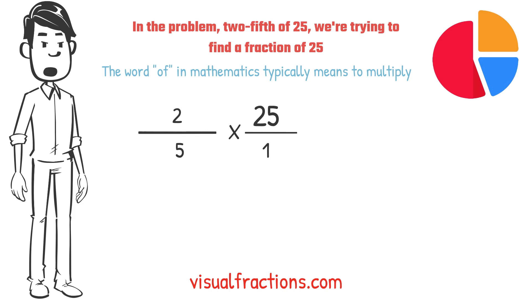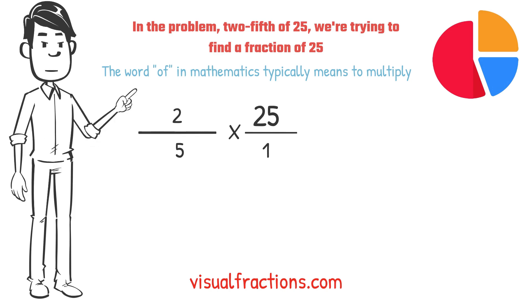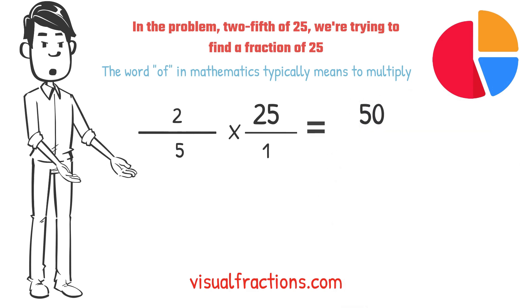This transformation makes it easier to work with our numbers as fractions. Now, we proceed to multiply across. First, multiply the numerators: 2 times 25 equals 50.